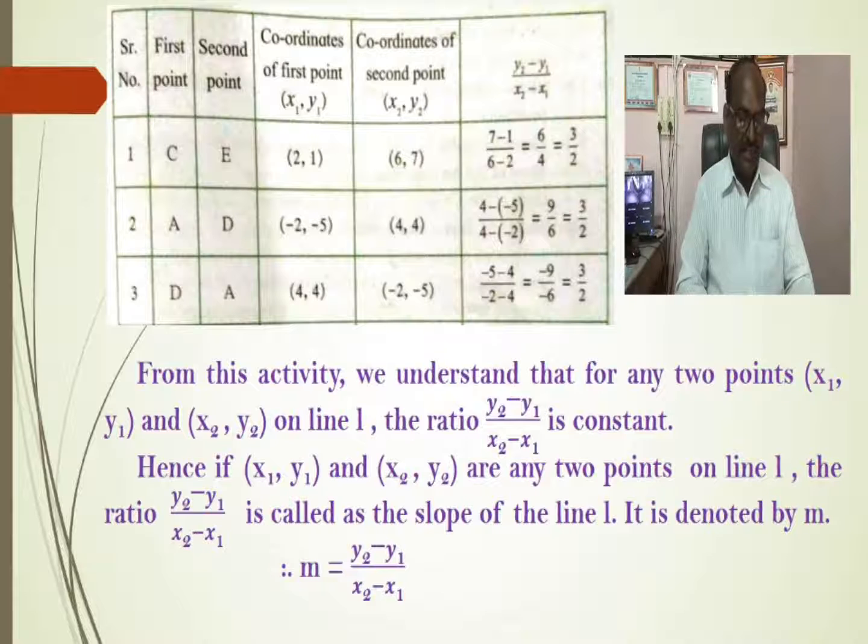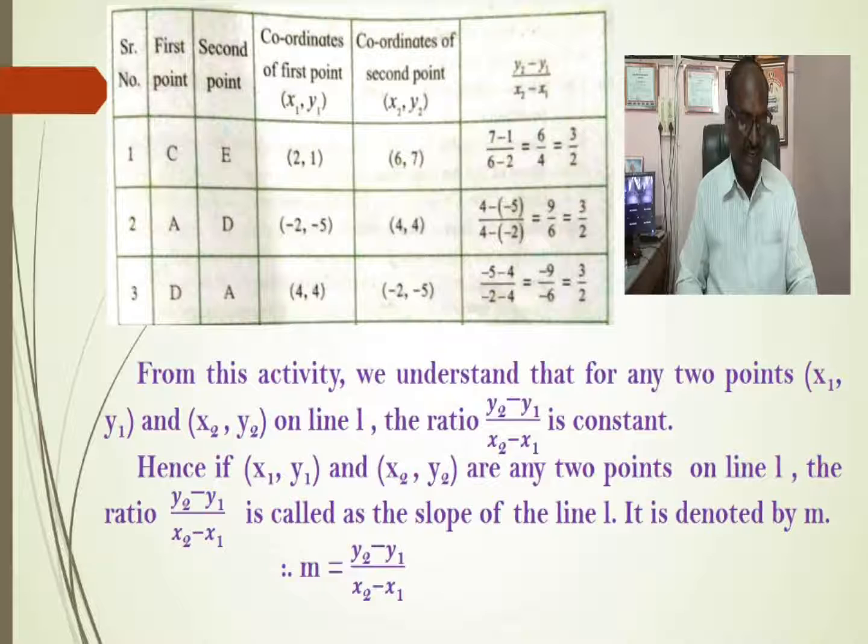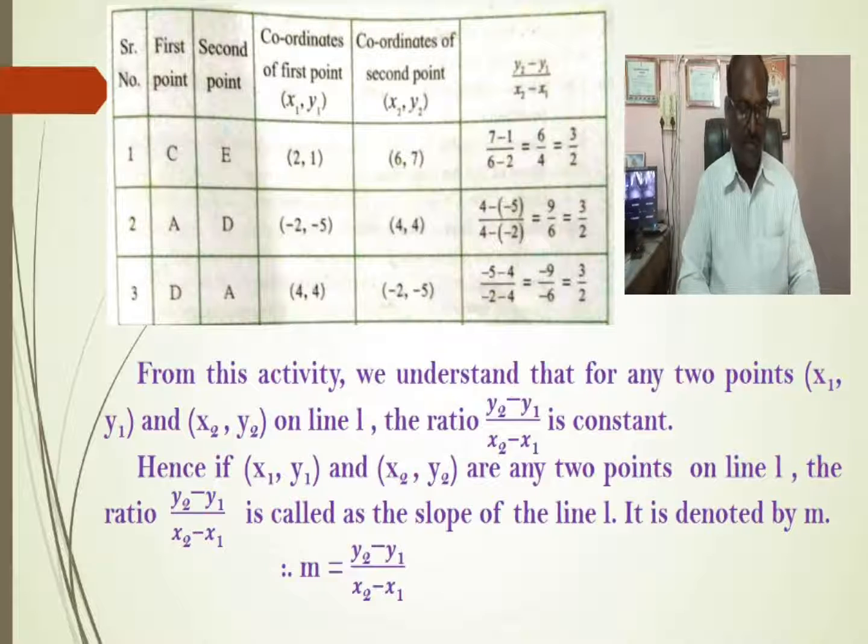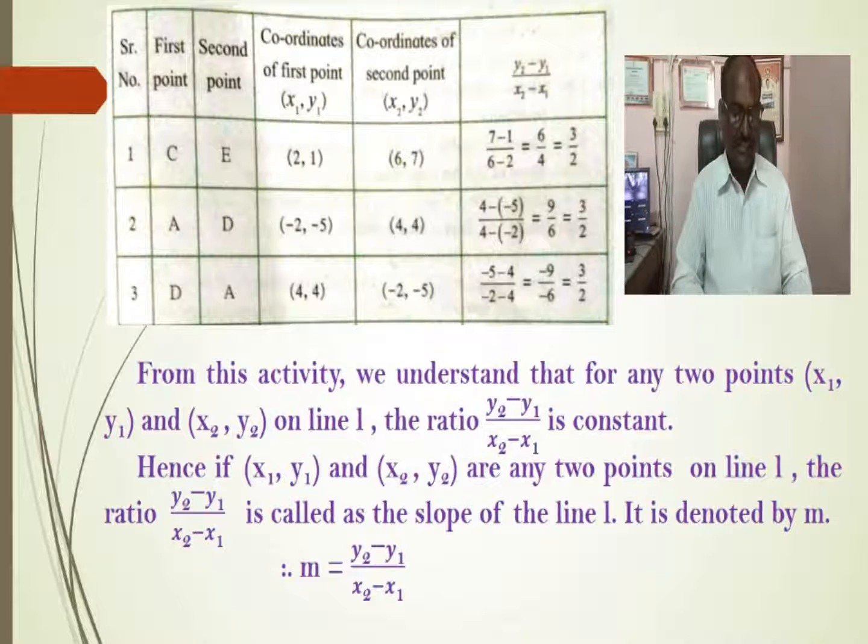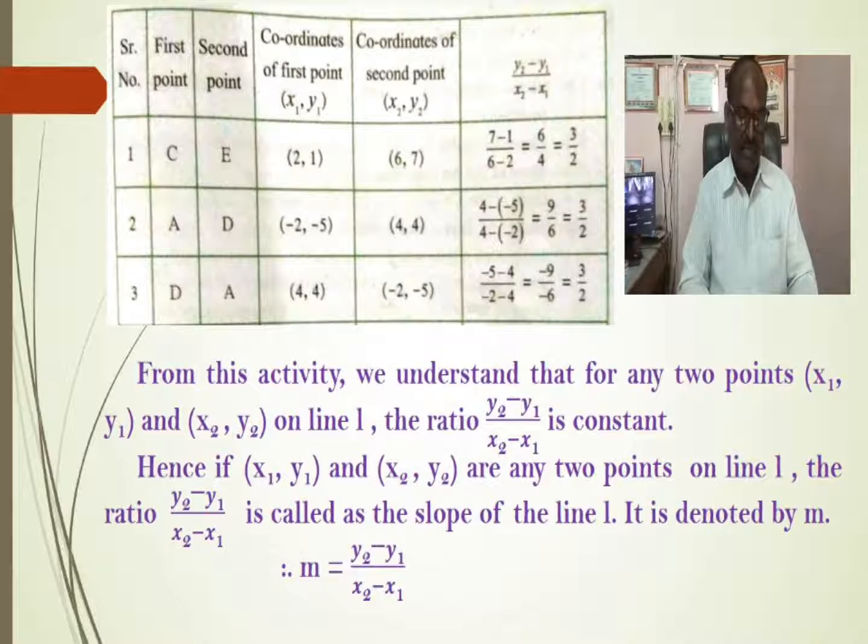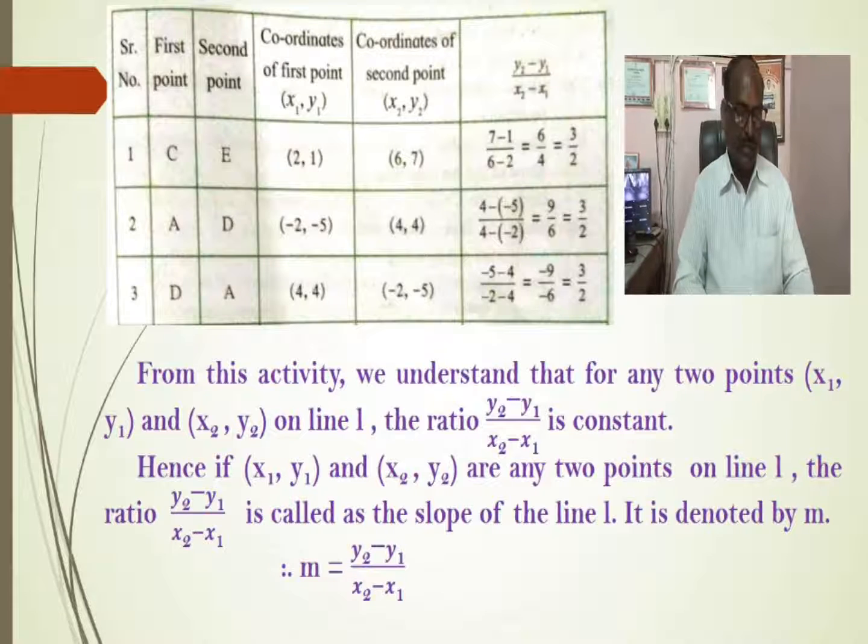In third example, points D and A are taken. Again, their coordinates are (4, 4) and (-2, -5). The ratio is (-5 - 4)/(-2 - 4), that is -9/-6. Again, it is equal to 3/2.